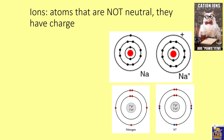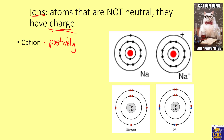We have these things called ions. Ions are just like an atom — they have a nucleus with protons and neutrons — but they're not neutral. Ion means it's charged. There are two kinds of charged particles you need to know. One kind of ion is called a cation, which is a positively charged ion.